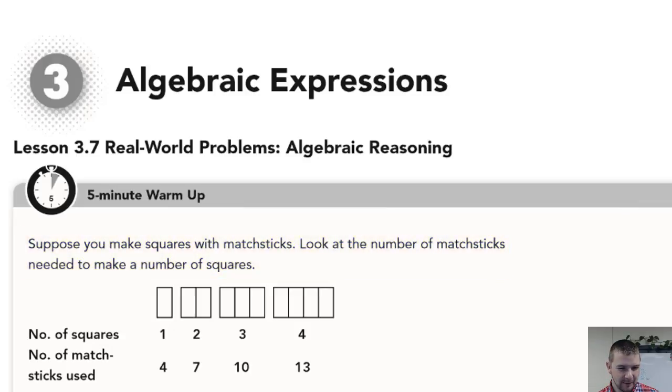Well, we can see here in one square, it takes four matchsticks. We would have one, two, three, four matchsticks all around the perimeter of the square, and that would take four matchsticks, and we can see that number listed below.